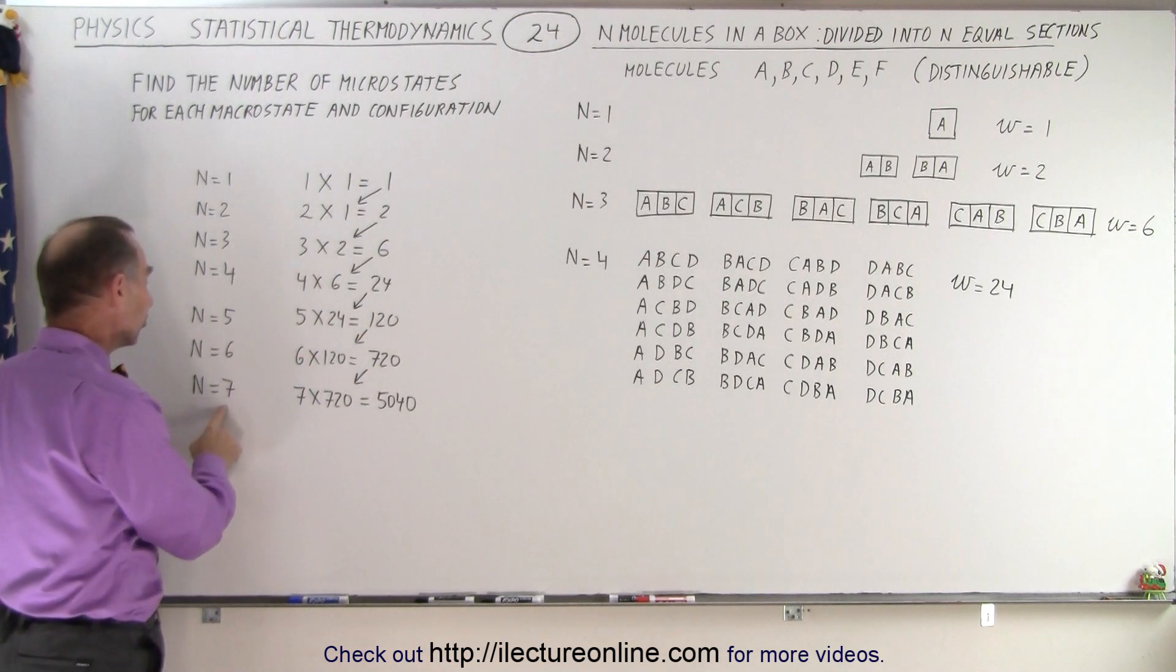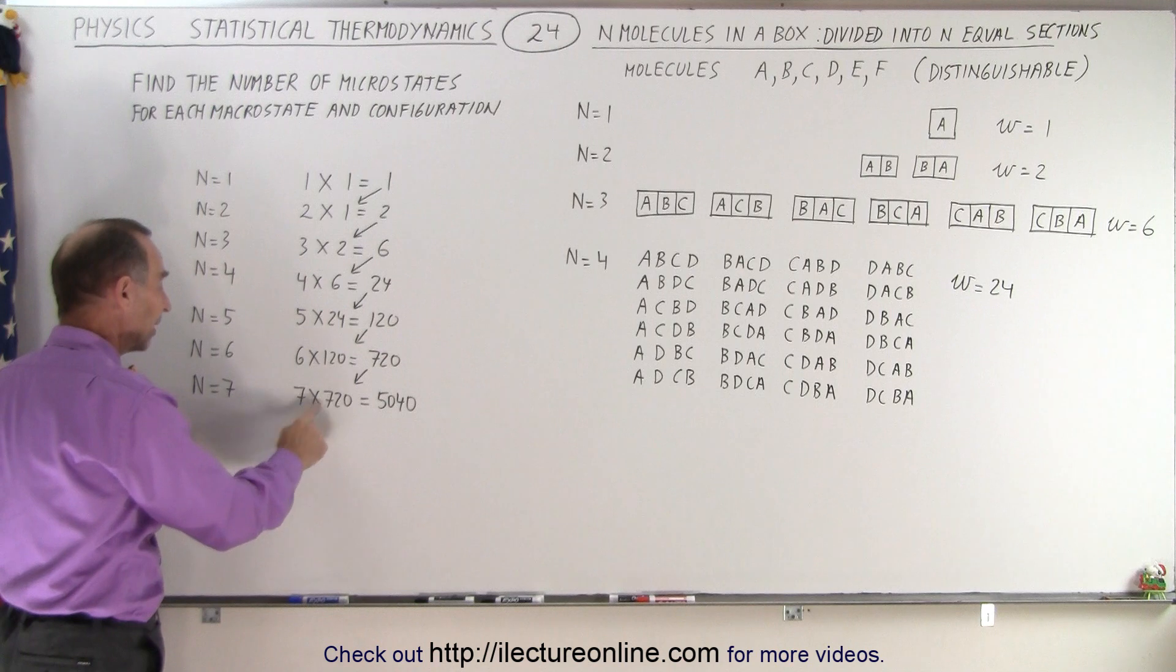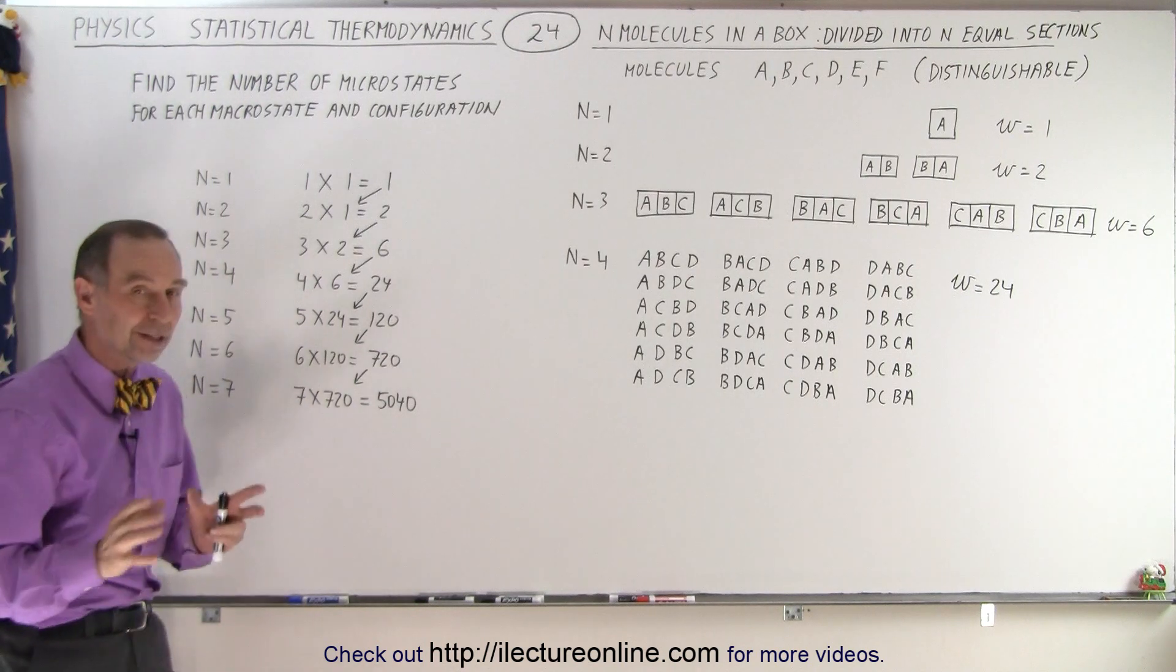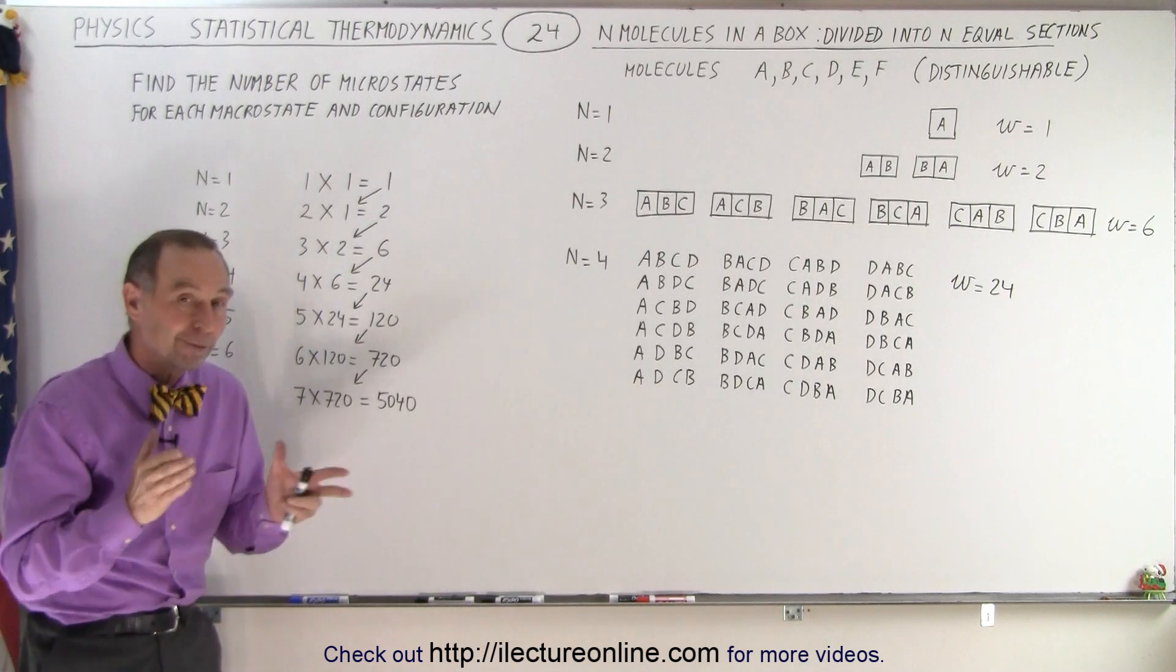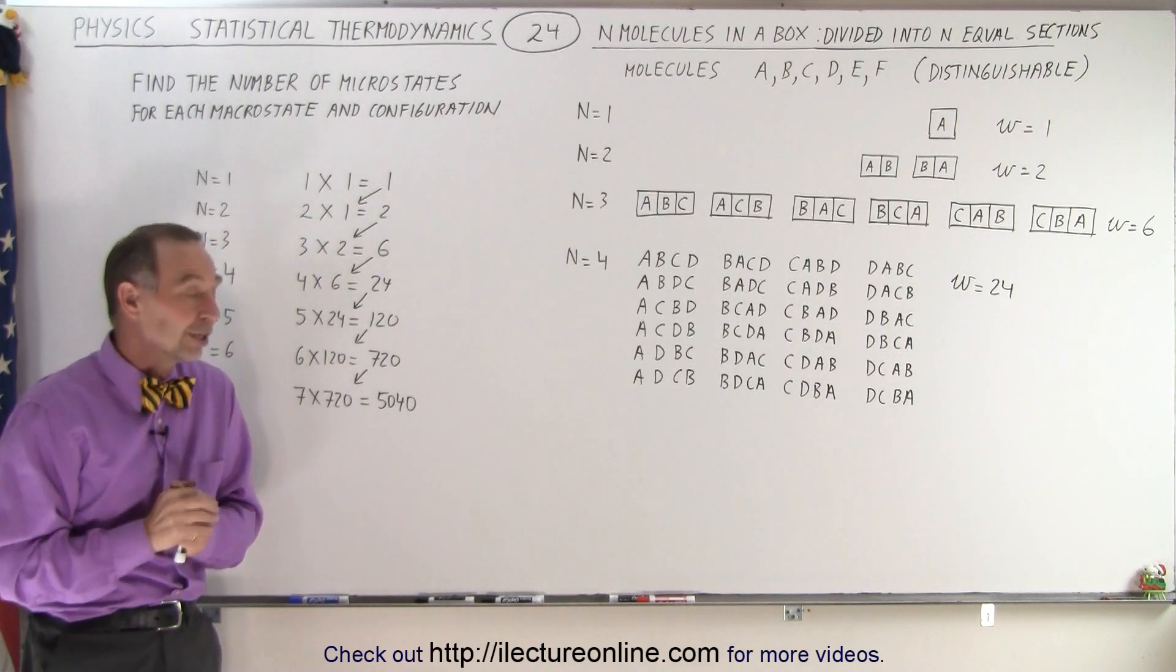And finally, n equals 7. Bring the 720 down. 7 times 720, or 5,040 different microstates in the case of seven molecules, seven partitions, and putting one molecule in each partition.